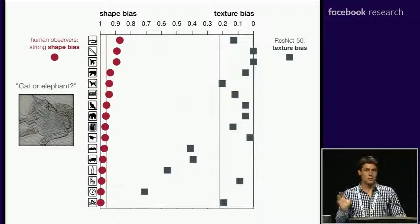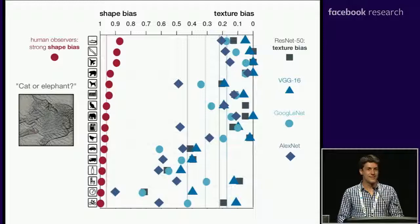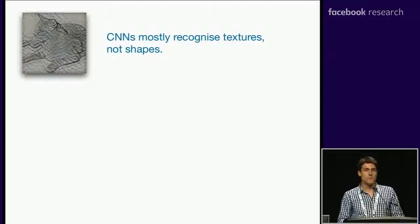This is not something specific to ResNet. We've tested lots of other networks as well — VGG, GoogleNet, AlexNet — and they're all very much on the texture side. To conclude this part of our work, CNNs seem to be using textures much more than we actually thought. They seem to ignore shapes much more than humans do, and they really have a strong texture bias. But something we still don't know is: is there anything we can do about this? Can we change the texture bias into a shape bias?